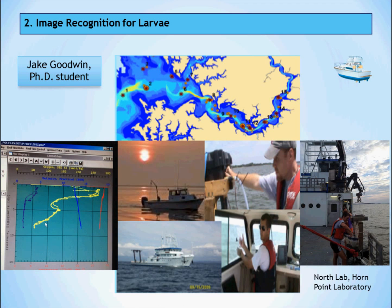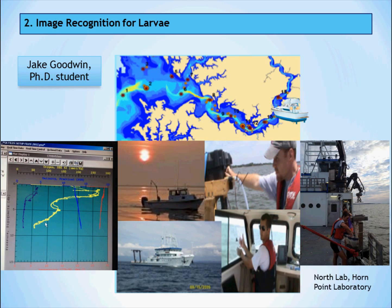Hi, I'm Jake Goodwin, a PhD student in oceanography at the University of Maryland. Currently, I have sampling efforts underway to help map out distributions of oyster larvae in the Choptank River. We're trying to gain an understanding of how factors like temperature and salinity alter the distributions and abundances of oyster larvae annually.